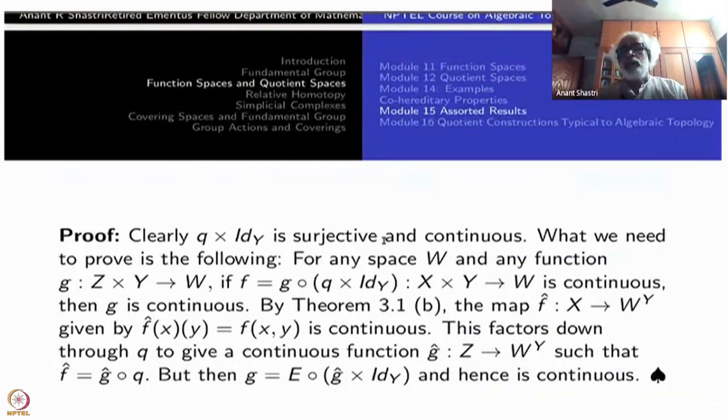Let us go through this one. You see, the function space theory that we have studied comes to help. Because we have locally compact Hausdorff space. Q × identity, because Q is a surjective map, is surjective and continuous. There is no problem about that.